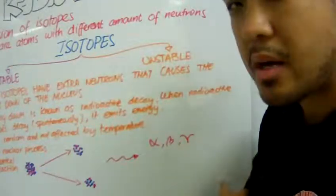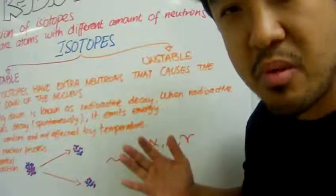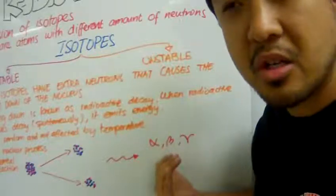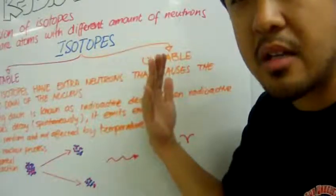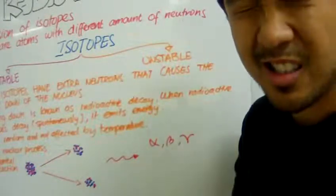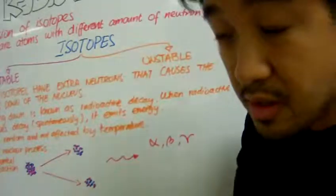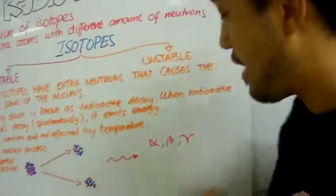But when beta particles come to our skin, it will penetrate our skin. So, in order to protect ourselves from beta particle radiation, we have to protect ourselves with aluminum foil. Yes, a thin sheet of metal is good enough to protect us from beta particle radiation.